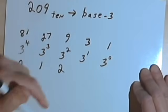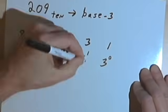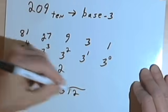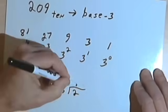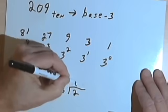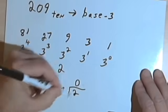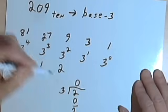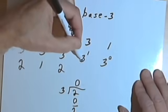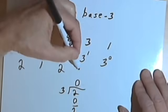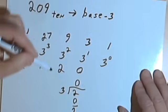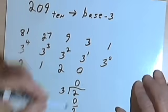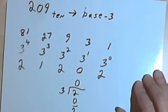I've got that remainder of 2. Now I should be trying to divide 3, or 3 to the 1st, into 2, and I can't. So it goes 0 times with a remainder of 2. In the 3 to the 1st column, I'm going to put in a 0. And I'll take that remainder and divide it by 1, so obviously that's going to be 2.